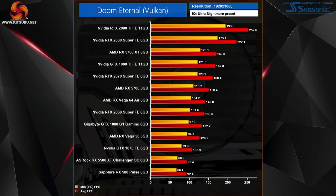Starting with our 8GB cards at ultra nightmare preset at 1080p, the frame rates were quite an eye-opener. The game runs fantastically well on even the slowest of these cards, with the RX 580 still averaging 90 frames per second — and again, this is the most demanding image quality setting the game has to offer. At the other end, gamers with a 2080 Super or 2080 Ti will be pushing well over 200 frames per second. The 1% lows are also nice and tight, with no dropped frames or stuttering across any of the testing.